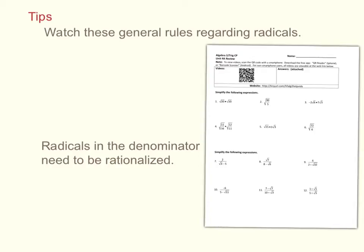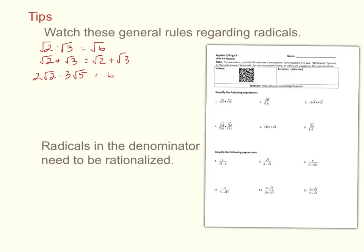The first rule: when you multiply two radicals, for instance root two times root three, you just multiply the numbers underneath and keep it under the radical, so root two times root three is root six. On the other hand, root two plus root three doesn't reduce — you can't combine radicals unless they are like radicals. Similarly, two root two times three root five: multiply the outsides together (two times three is six) and the insides together (root two times root five is root ten), giving six root ten.